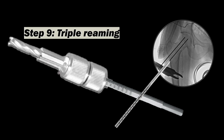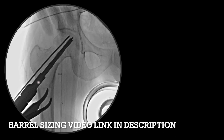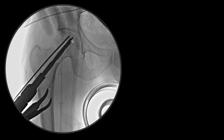Whenever stability is in doubt, go for a longer barrel. The triple reaming process has started here — the terminal part of the reamer should go till the subchondral bone. If you don't ream this track adequately, you will face difficulty in placement of the tap and screw in this area. In cases of osteoporotic bones, you can keep some part unreamed because bone purchase is already doubtful.